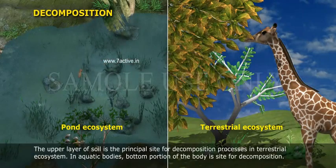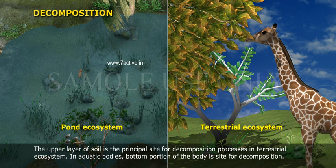The upper layer of soil is the principal site for the decomposition process in a terrestrial ecosystem. In aquatic bodies, the bottom portion of the water body is the site for decomposition.